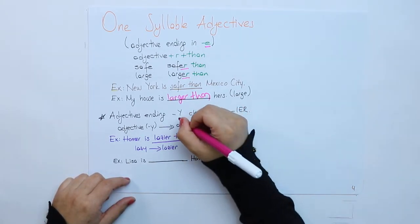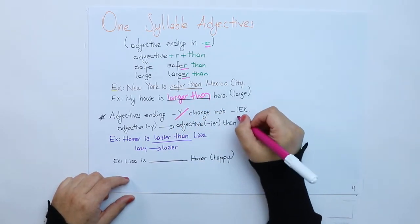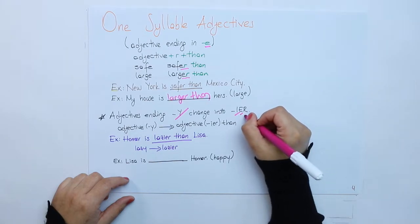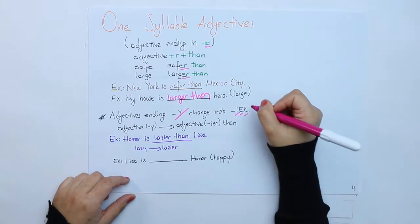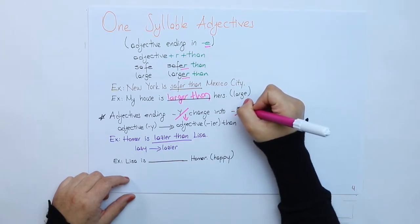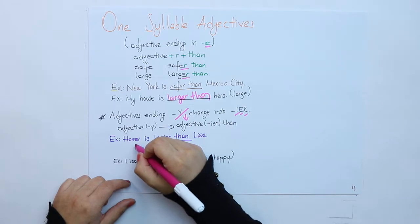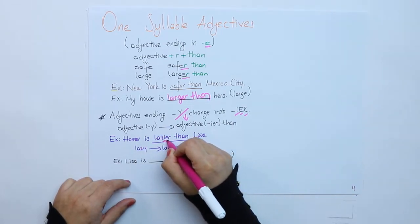Adjectives ending with Y change into IER. Y drops and it turns out to I.